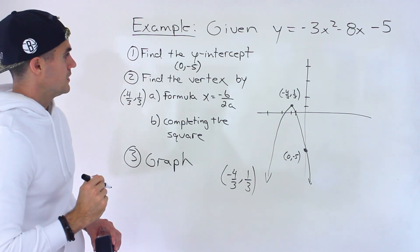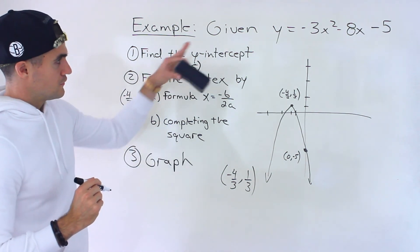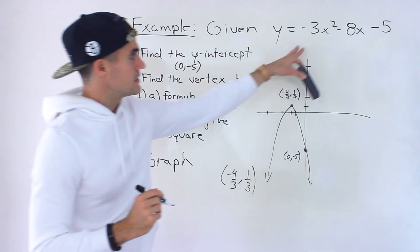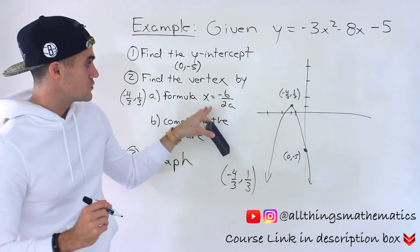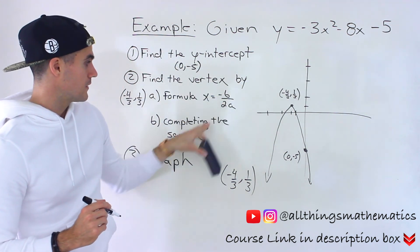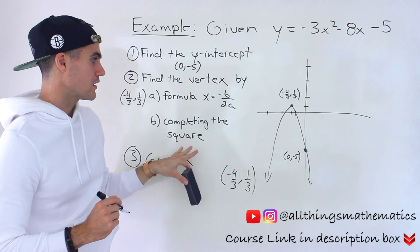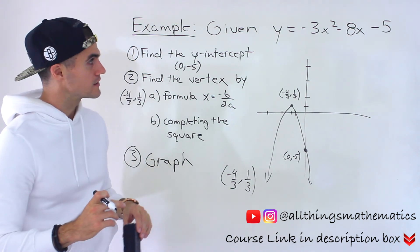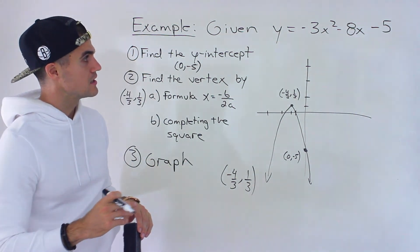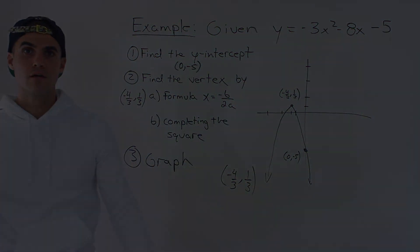So if you get a problem like this, find the vertex two different ways: use the formula and then complete the square. Completing the square is a bit more involved when you're dealing with fractions, but it's the same process — just a little more algebra.